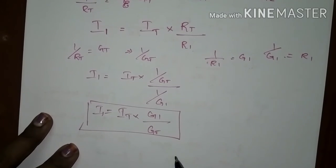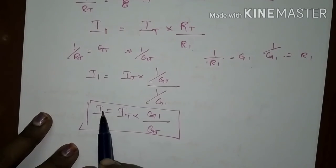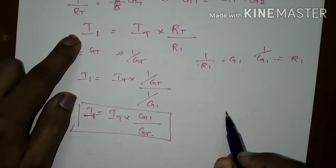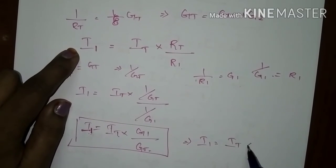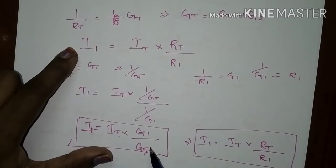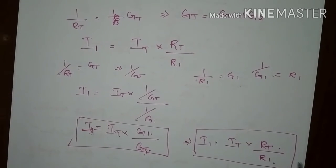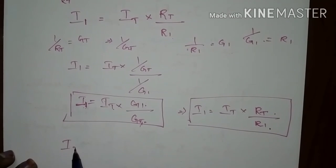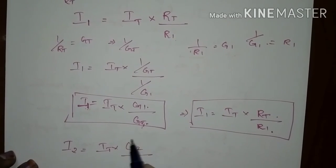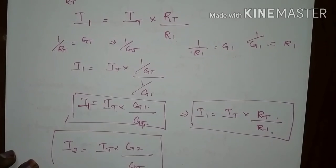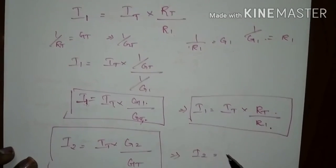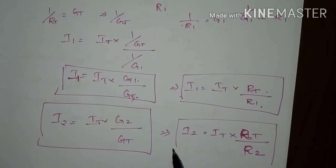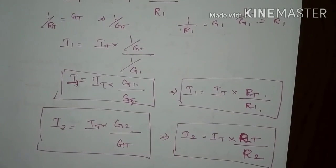The current divider equation in terms of conductance is: I1 equals IT multiplied by G1 divided by GT. In contrast, the resistance-based current divider equation is: I1 equals IT multiplied by RT divided by R1. The key difference is that for conductance it is G1/GT, whereas for resistance it is RT/R1. Similarly, I2 equals IT into G2 divided by GT for conductance, and IT into RT divided by R2 for resistance.